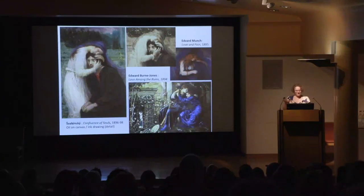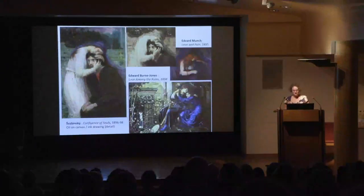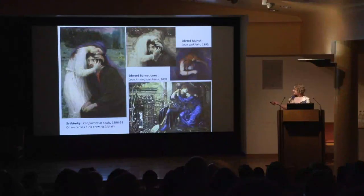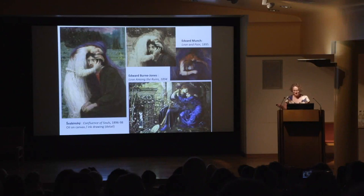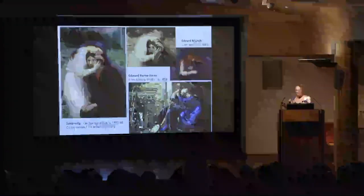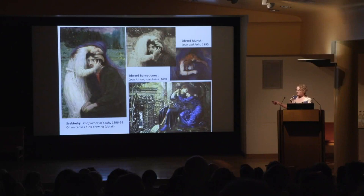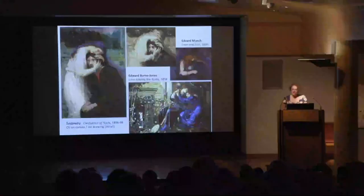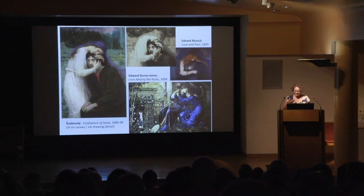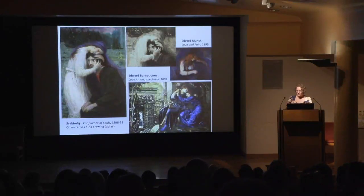When it comes to several works by Svobinský collectively called The Confluence of Souls — a series of about five works — the most famous today is an oil painting. However, the final version which Svobinský actually considered the climax of his efforts was a detail in ink on paper. He had a deeply-seated love for works on paper, for ink drawing and watercolours, which he personally preferred over oils.